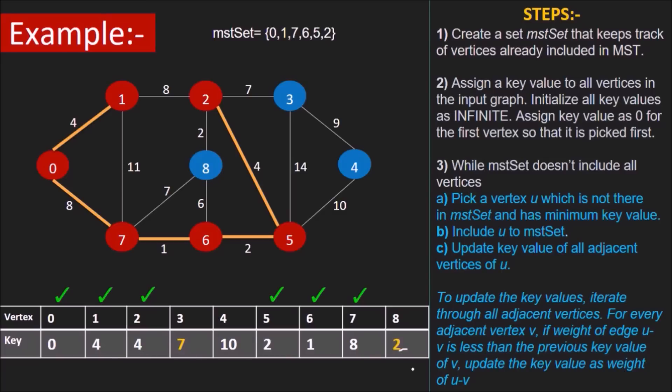Now v8 has the lowest key 2 added to the MST set. We see that v8 has no vertex adjacent to it not already a part of MST set. Thus, no keys will be updated in this case.